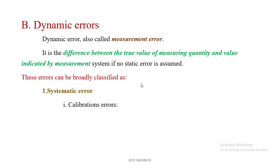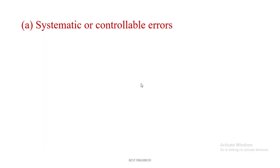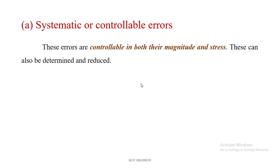These errors are classified into systematic error, which is classified into calibration error, atmospheric error, stylus pressure error, and avoidable errors. The second type in dynamic error is random error. Systematic or controllable errors are controllable in both magnitude and stresses. These can also be determined and reduced.